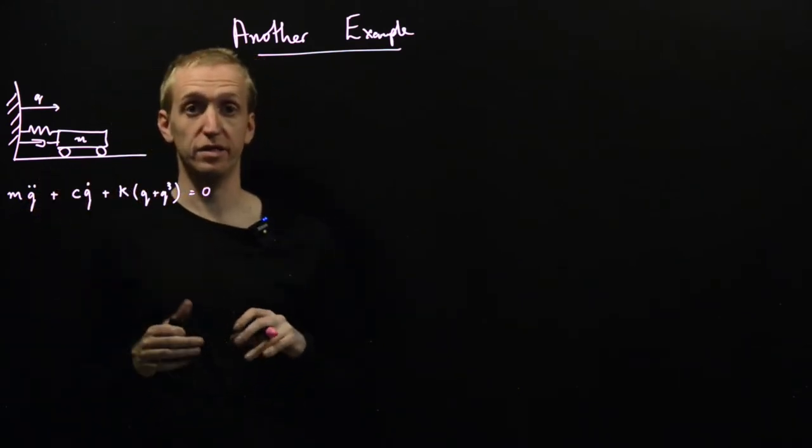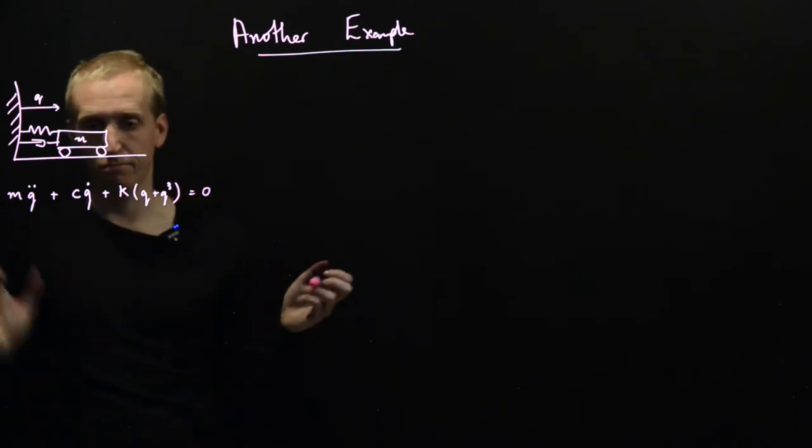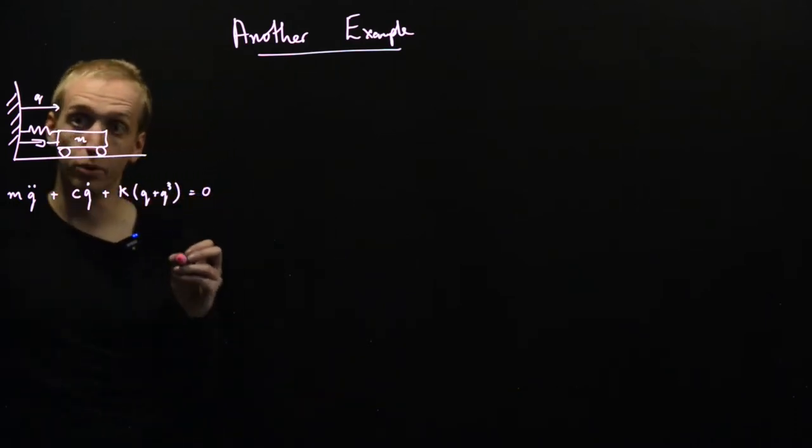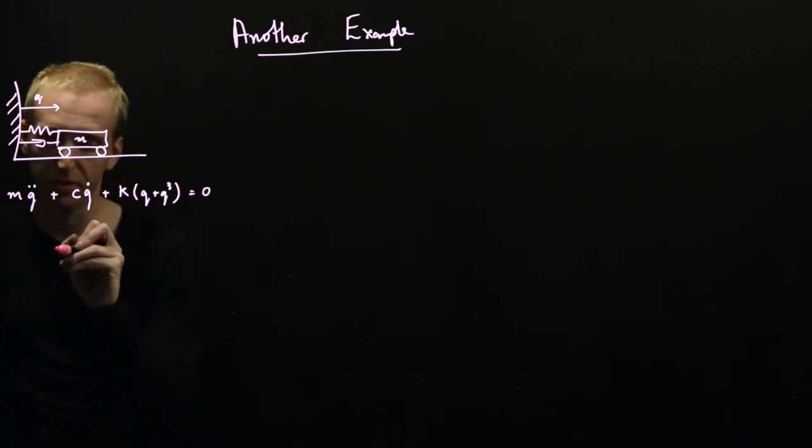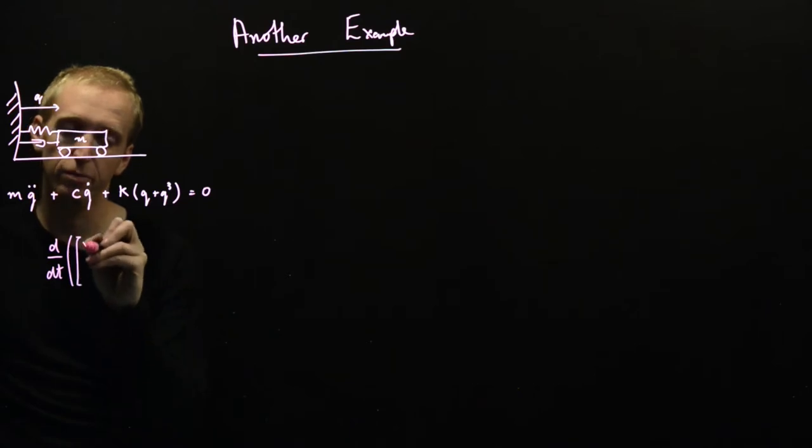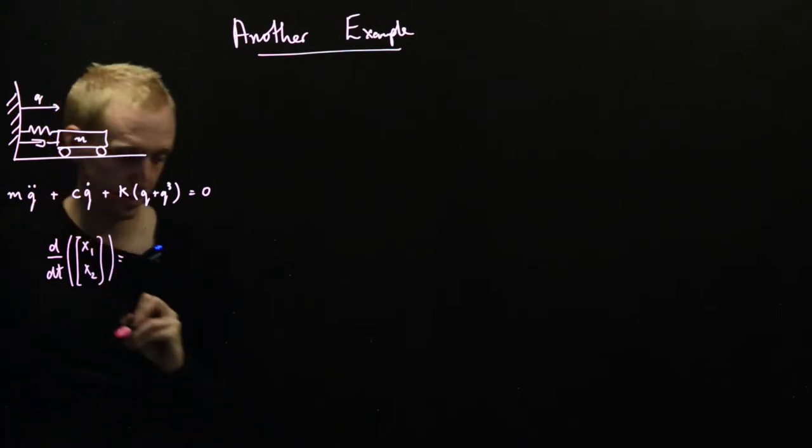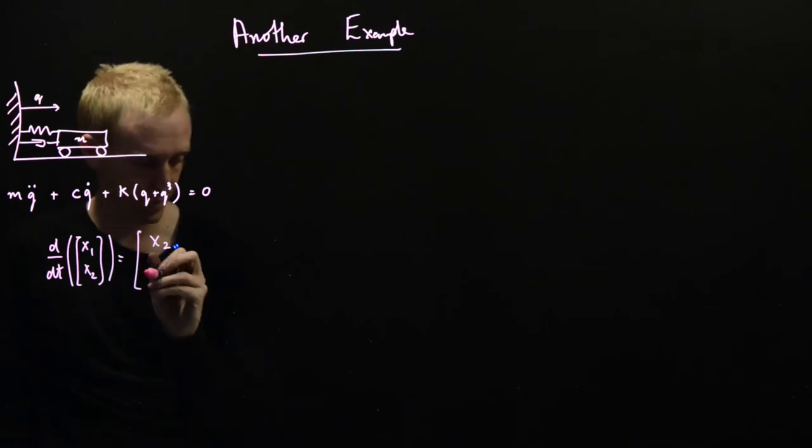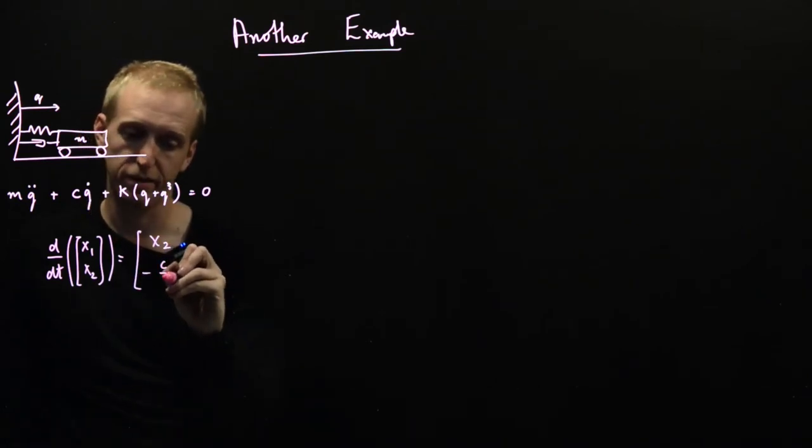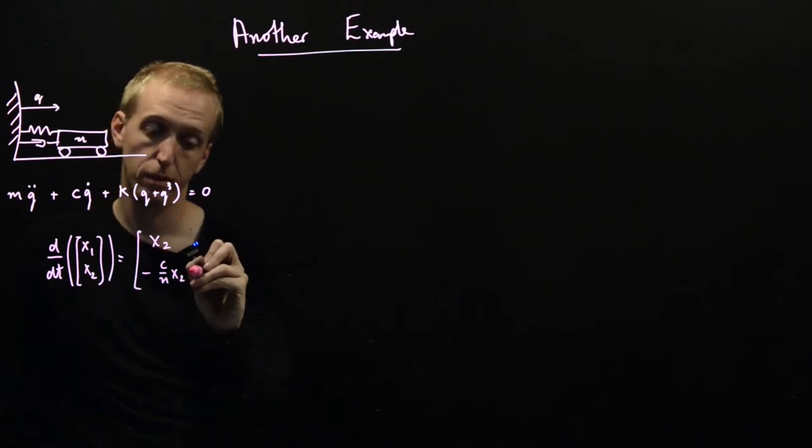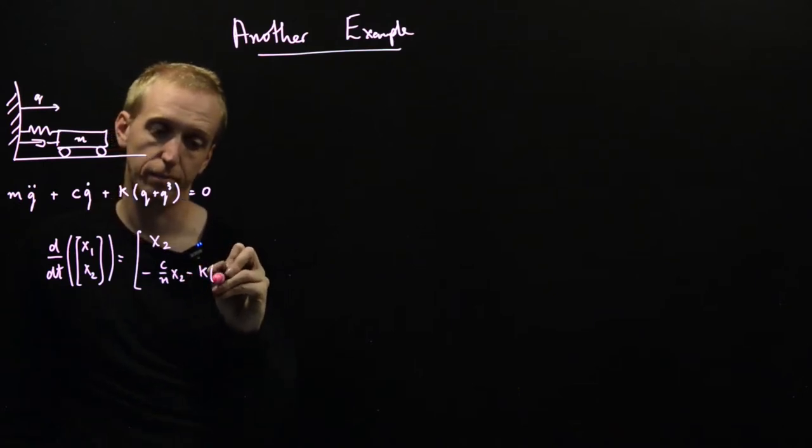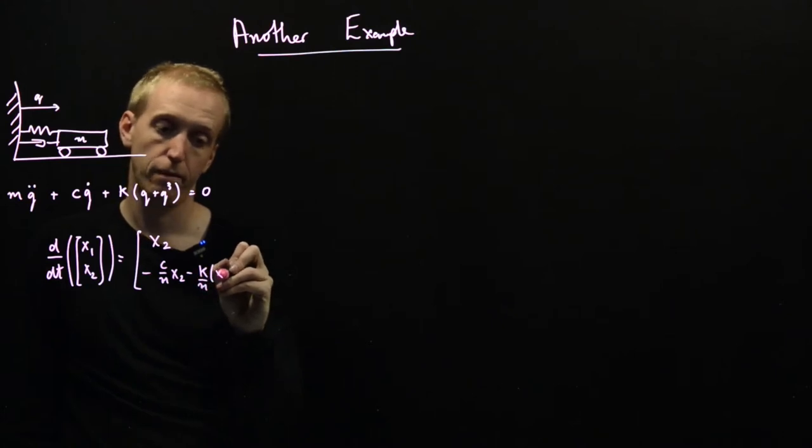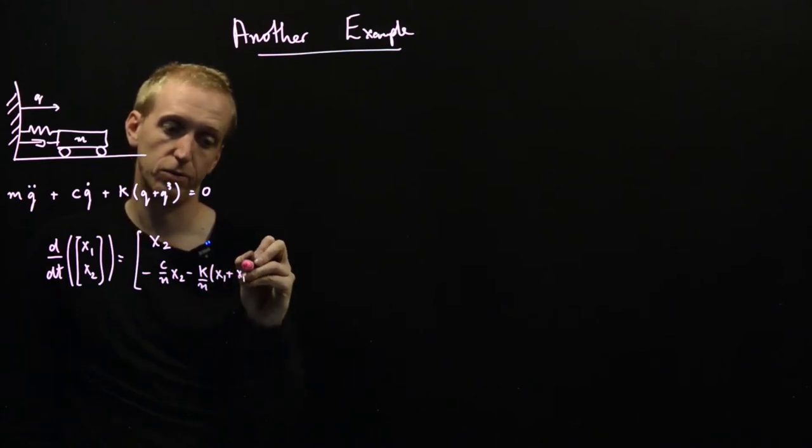So this is the system that we're going to study and as always the first thing that we do is we put it into our standard form. So as always we have d/dt of x1 and x2, once again it's a two-dimensional system, and this is going to be equal to x2 and here we have minus c over m x2 minus k over m times (x1 plus x1 cubed).